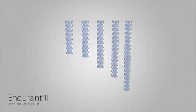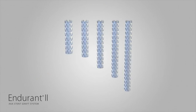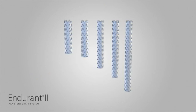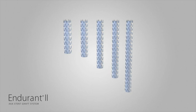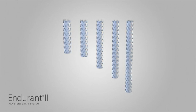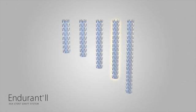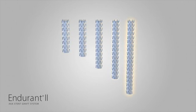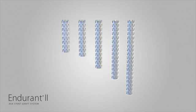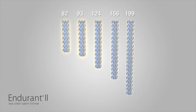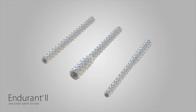Endurant 2 provides more options for patient customization with two additional contralateral limb lengths: 156 millimeters and 199 millimeters. Endurant 2 contralateral limbs range from 82 millimeters to 199 millimeters in length.